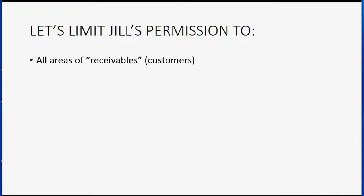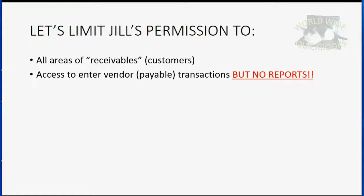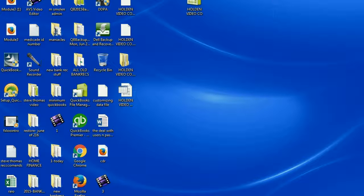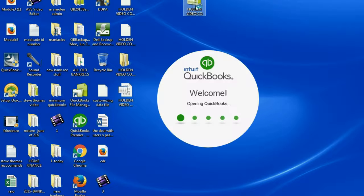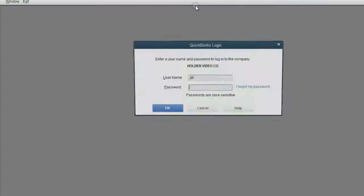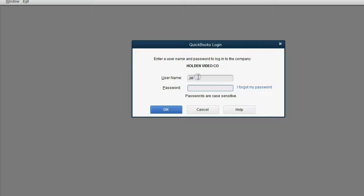Now let's go even deeper. Let's limit Jill's permissions so that she can handle all areas of receivables and customers, and she has access to the vendors and payables transactions but not the reports. What would we have to do first? We'd have to close the file and reopen it and log in as the administrator, because only the administrator has the ability to do that.